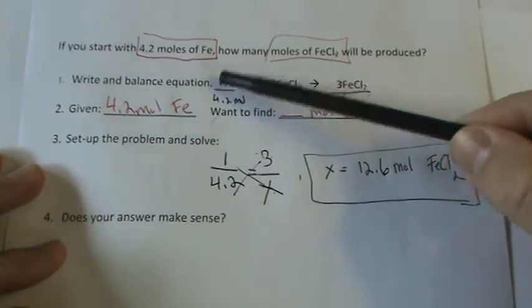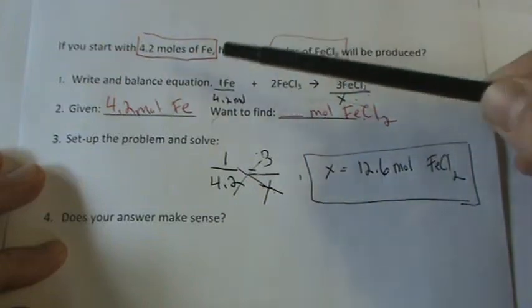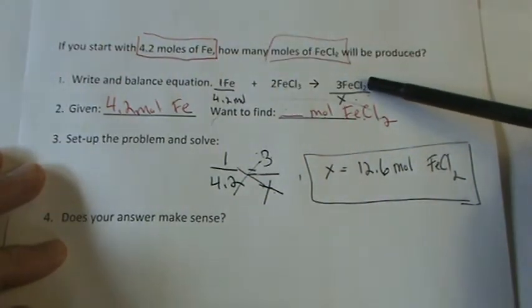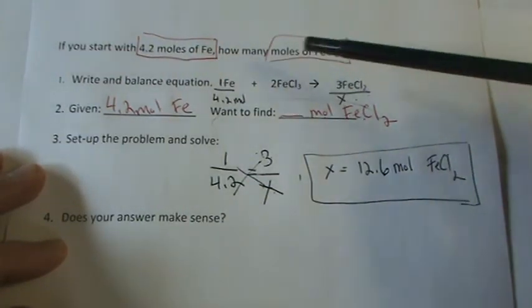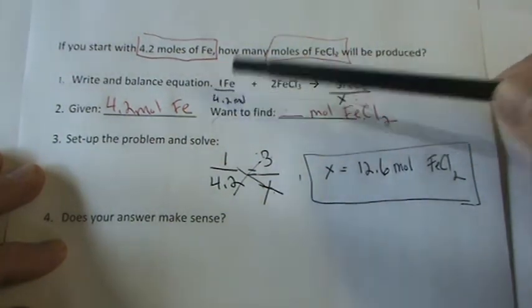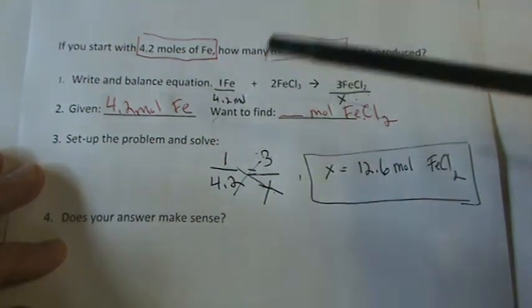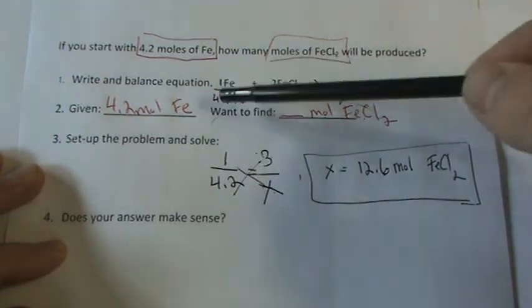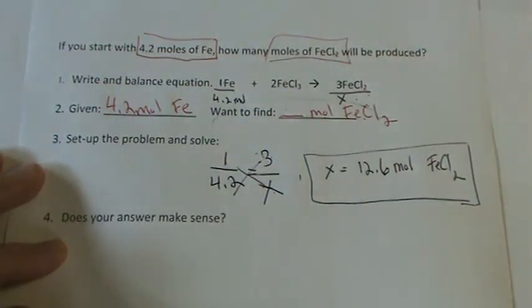Let's just check that. If I go from 1 mole to 3, so 1 mole of Fe turns out to be 3 moles of FeCl2. So that's 3 times that, so 4.2 should be 3 times that, so 3 times 4.2 is 12.6. Our answer makes sense.